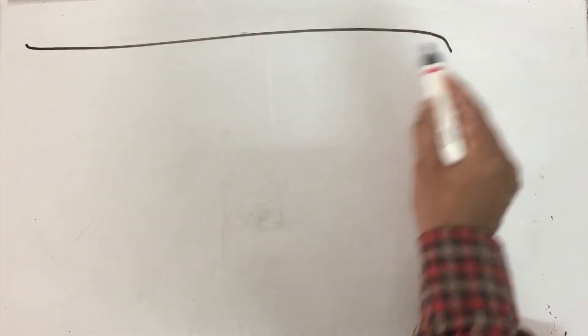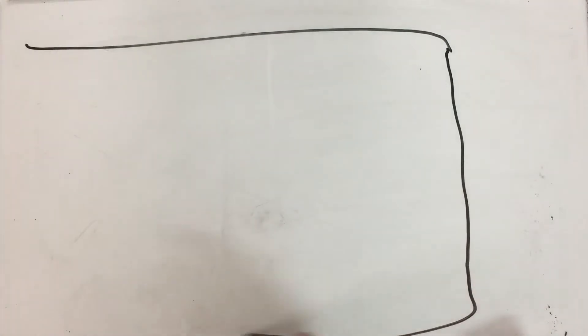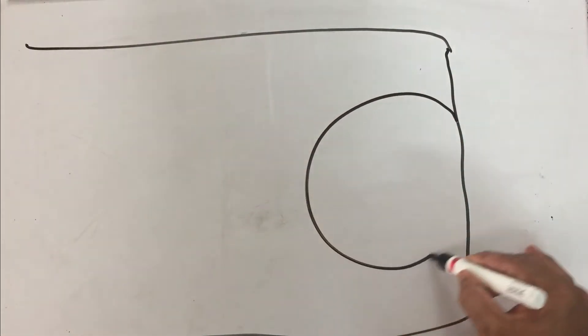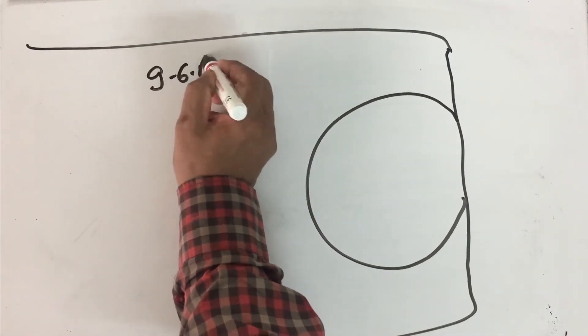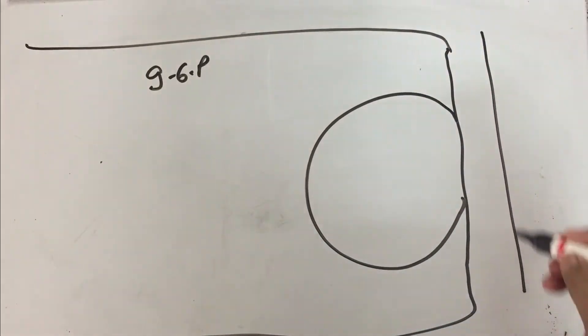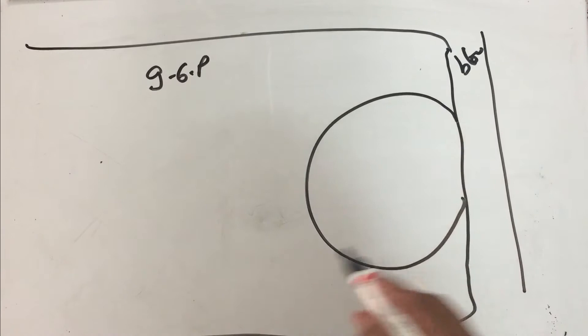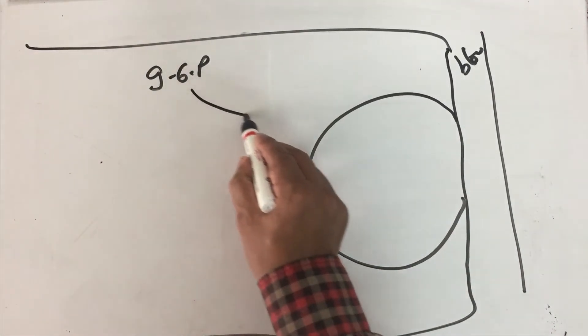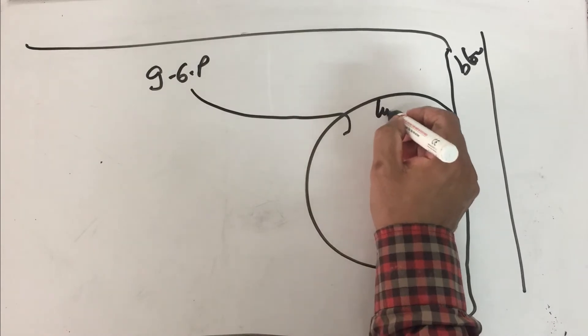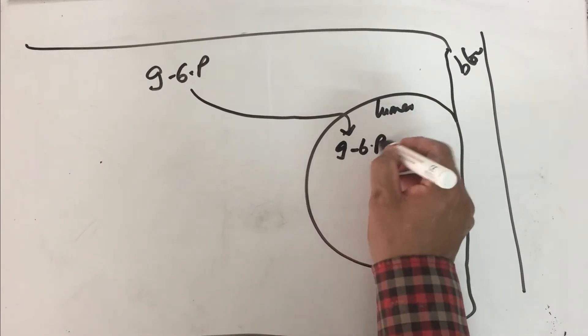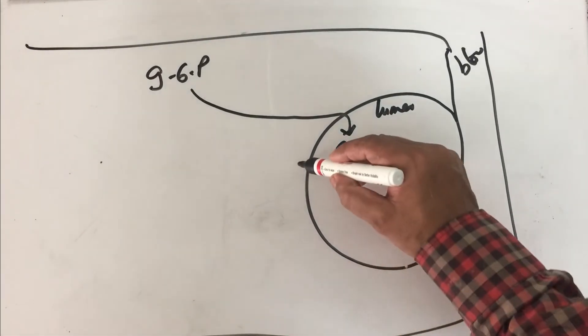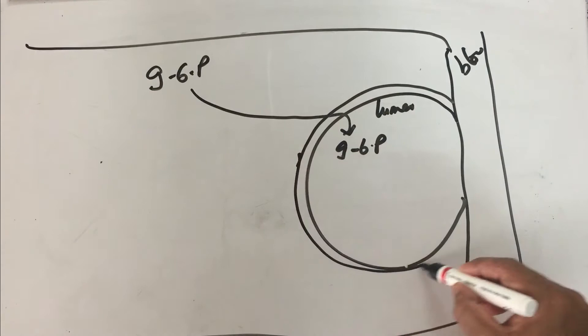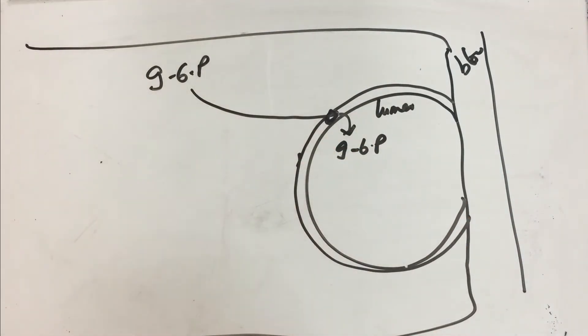For example, if you consider this is the cell, in the cytoplasm these reactions were happening. Now this is the lumen which I am drawing. We have formed glucose-6-phosphate. So what happens? One of the functions of liver and kidney is to maintain blood glucose level, so it has to be released into the bloodstream. This is the bloodstream. So glucose must be released.